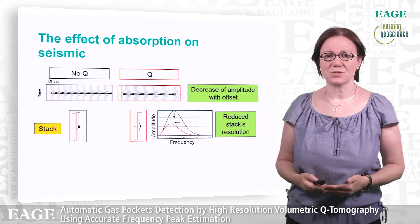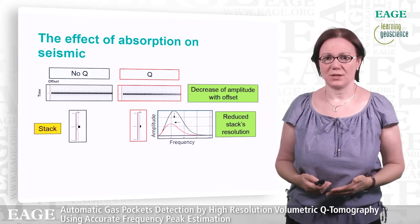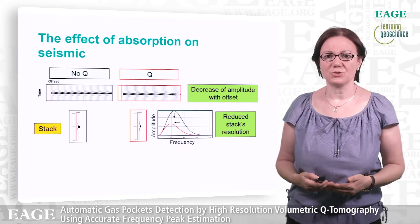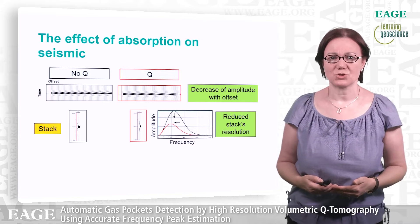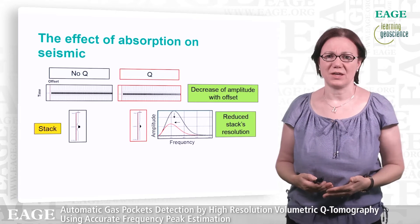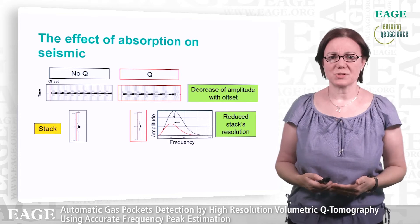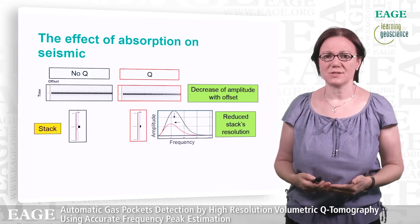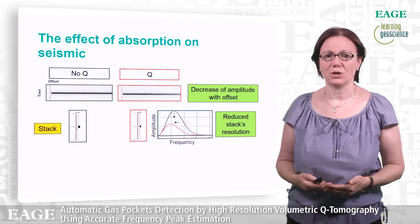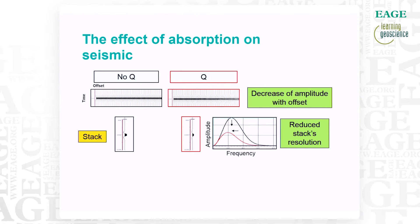Stacking these two events, we get a reduced resolution of the events affected by Q. The amplitude spectrum of the associated stack shows loss in amplitude, a reduction in bandwidth, and also a frequency peak moving towards the low frequencies.